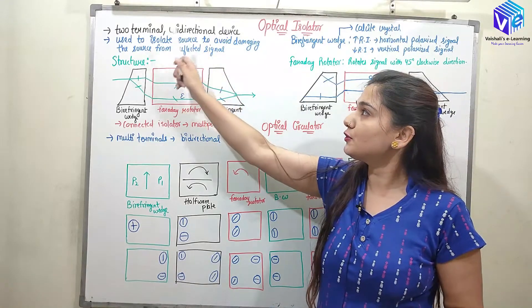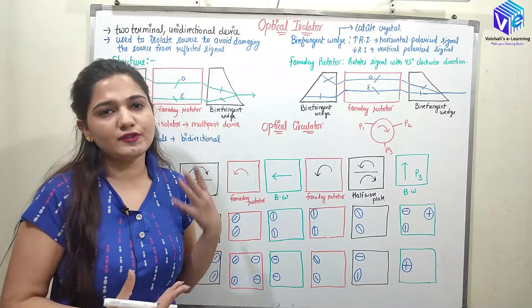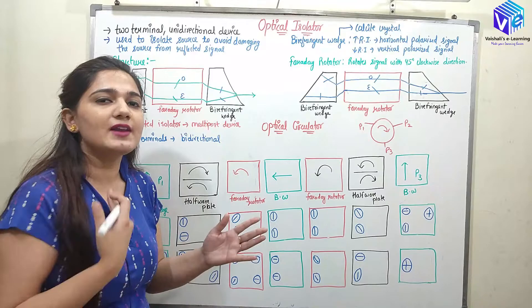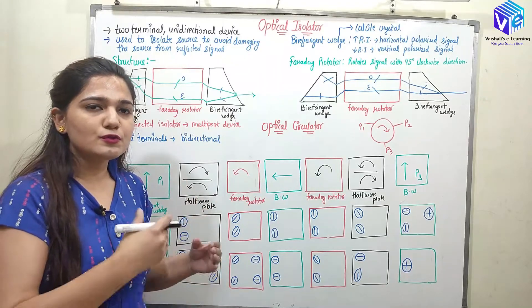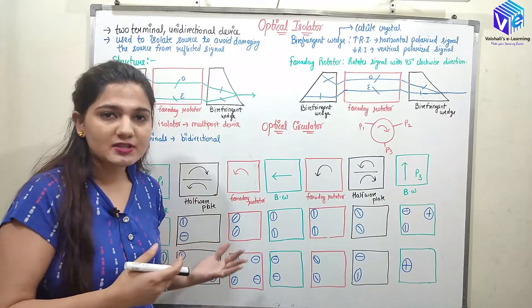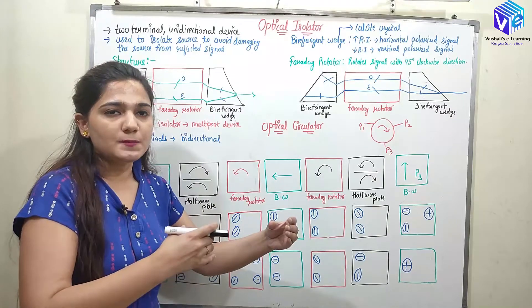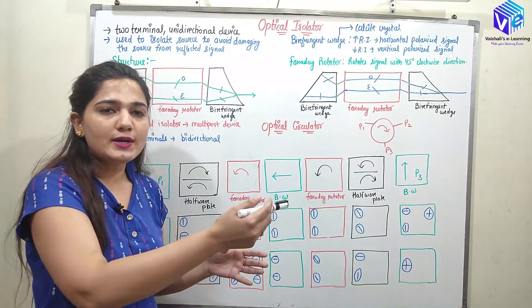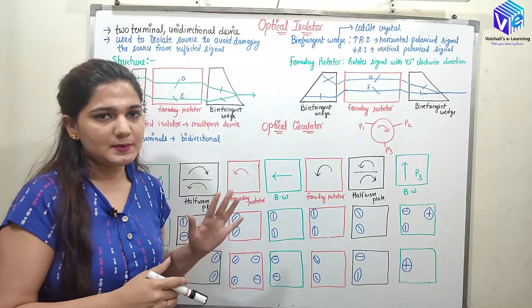Optical isolators are two-terminal and unidirectional devices. They transmit the signal only in one direction — this is the beauty of the optical isolators. Whenever we don't want reflection of the signals, we can use optical isolators, like with the source. When a source is sending the optical signal, we don't want the signal reflected back towards the source, which can damage it. So in this scenario, we can use an optical isolator in between the source and the optical fiber, sending the signal only in the forward direction. Reverse reflection is not possible when the optical isolator is present.